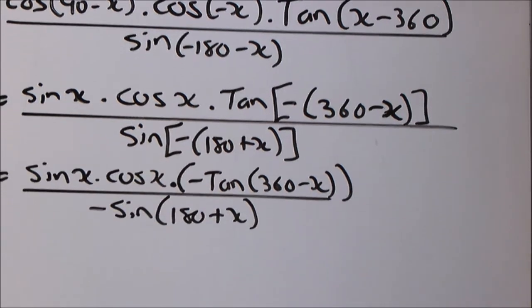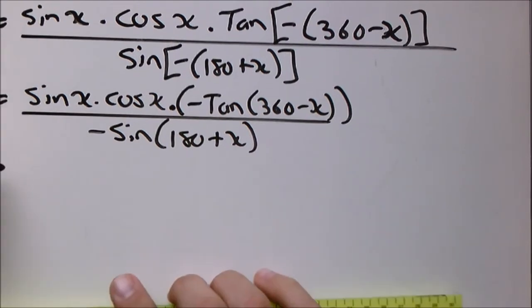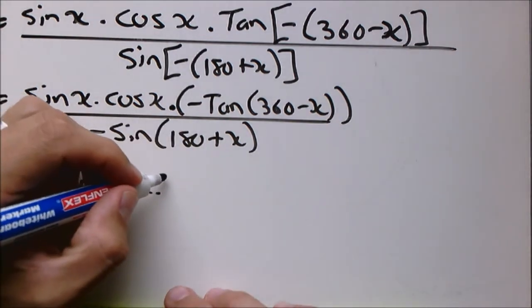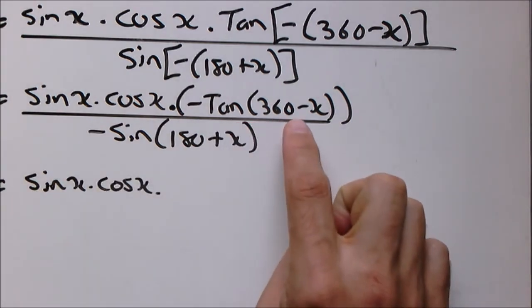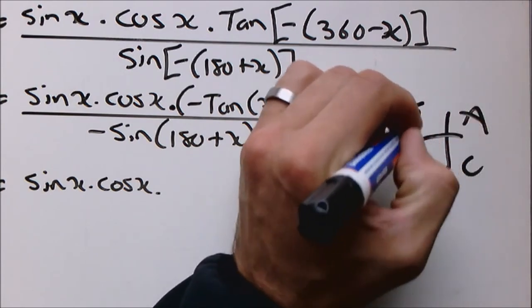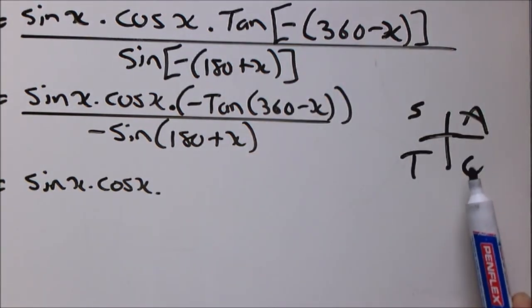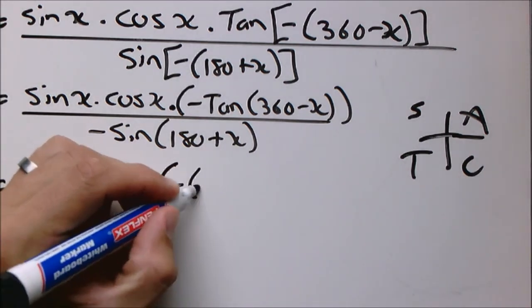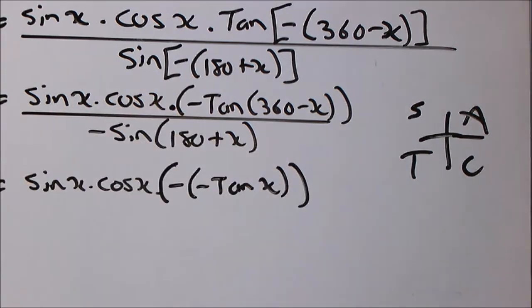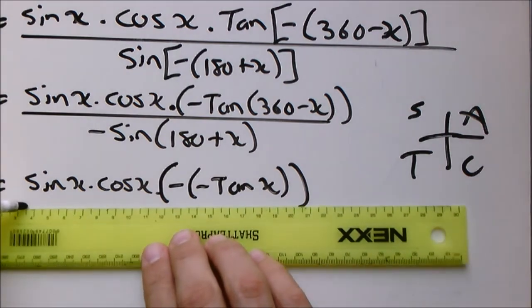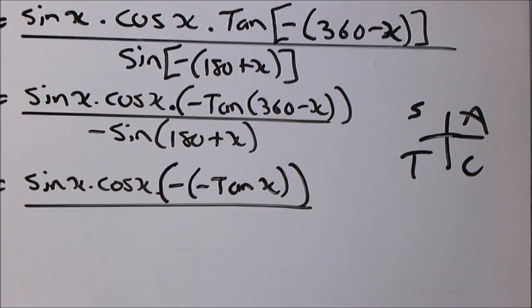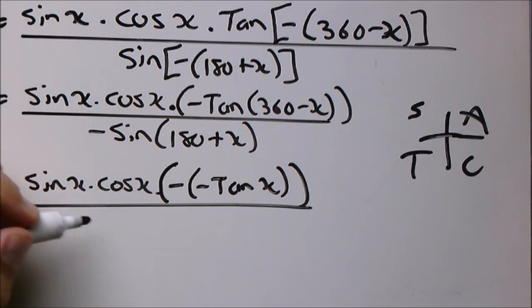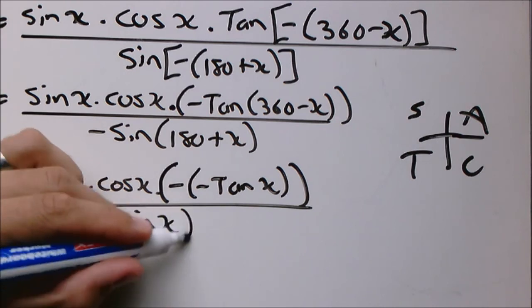Now we can take this one further, to use the reduction formula. So we still have a negative tan there, but if we say tan 360 minus x, remember your CAST diagram, it's the fourth quadrant, it's negative there. So it will be a negative times minus tan x, which will become a positive. And for sine 180 plus, it is in the third quadrant, it is negative there. So this will be a minus bracket minus sine x, which will become a positive as well.